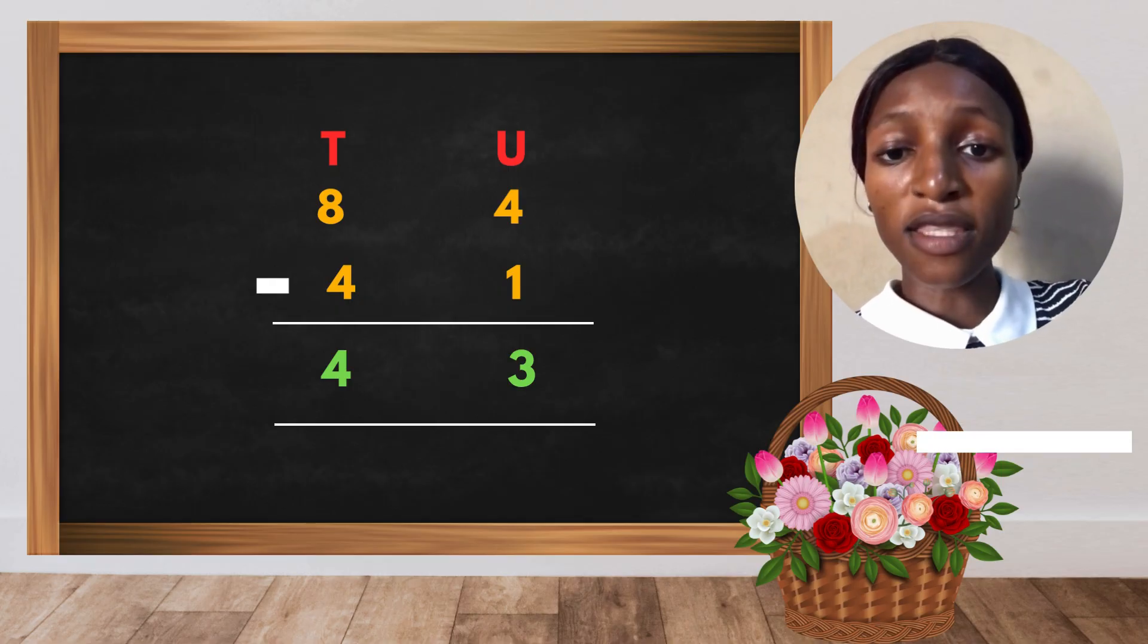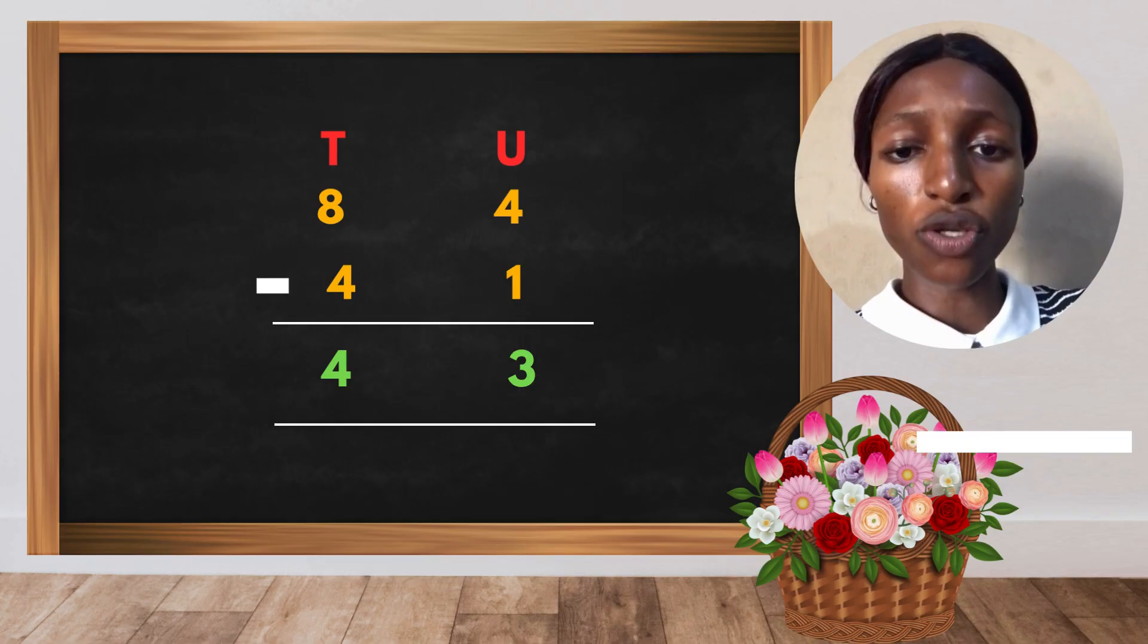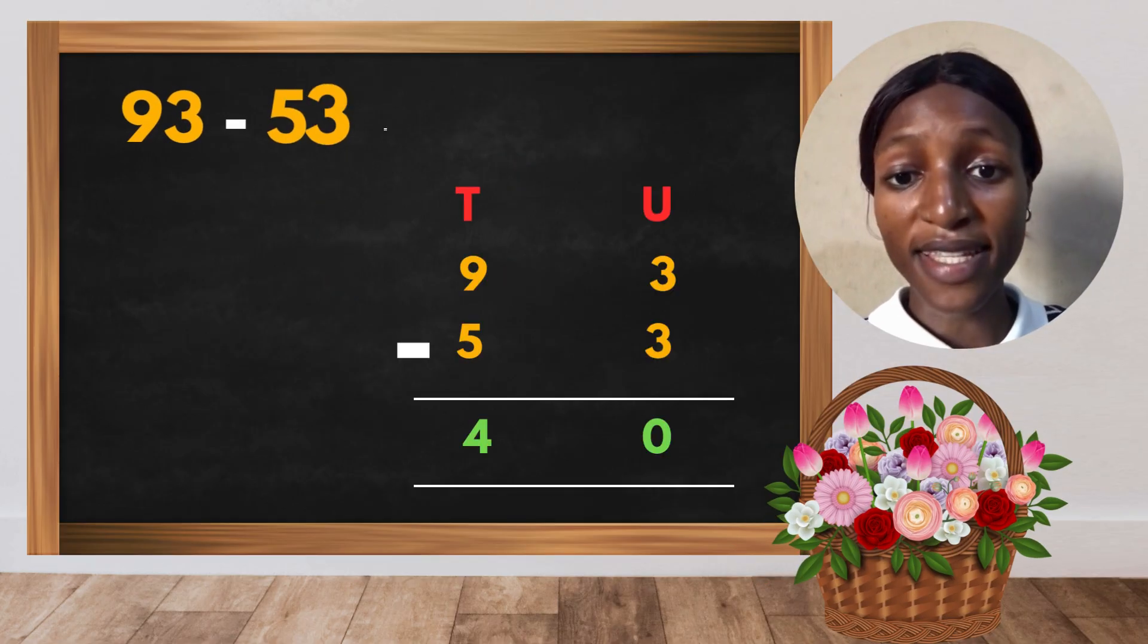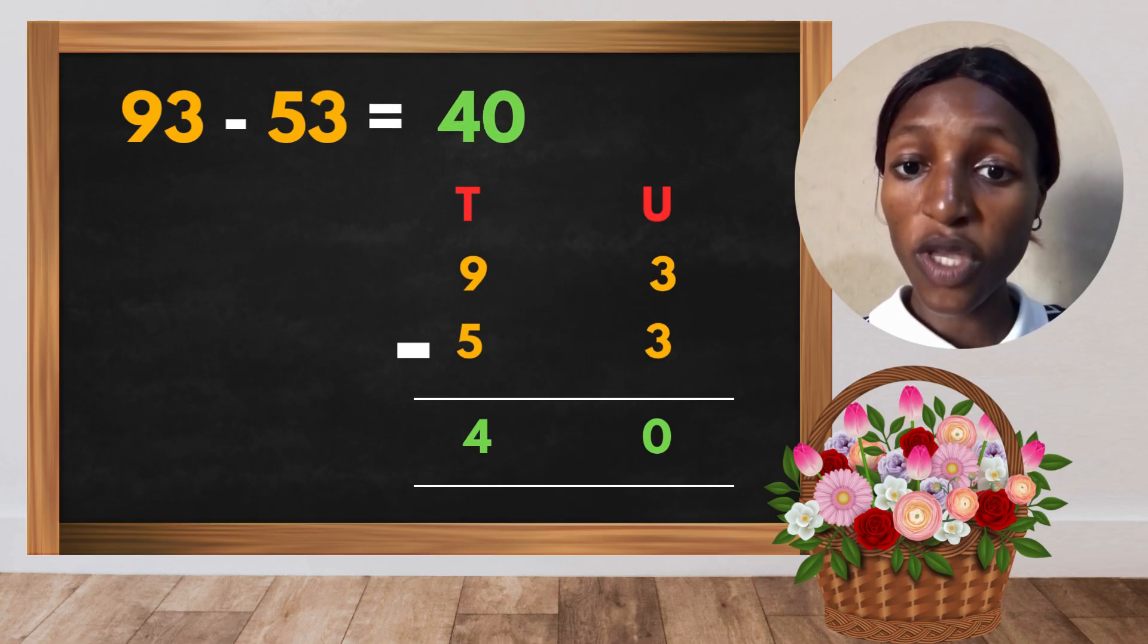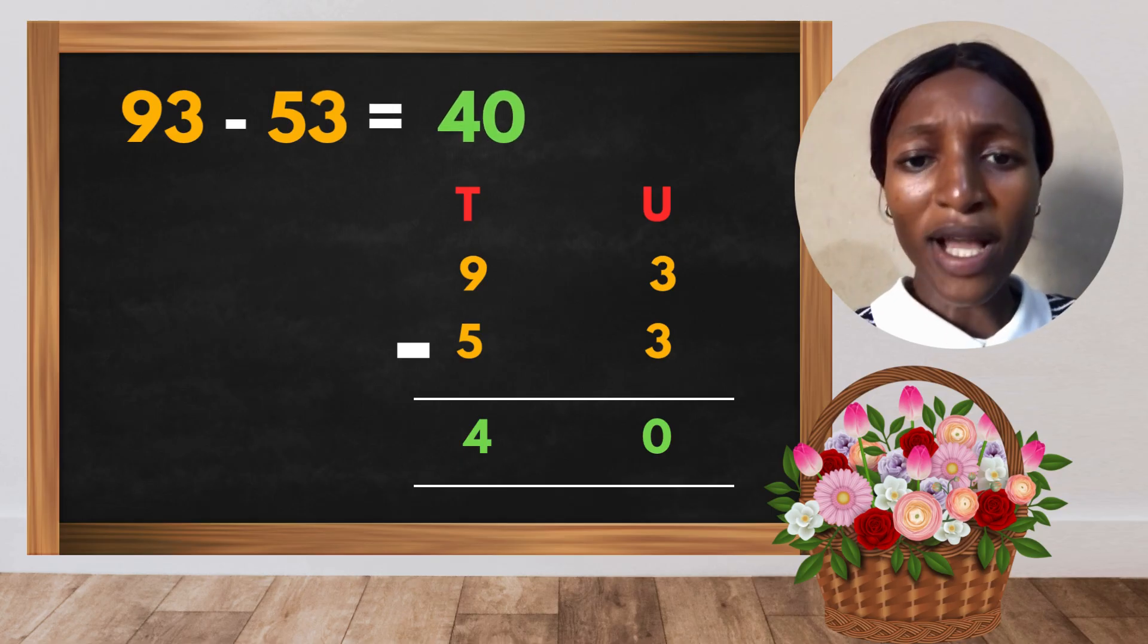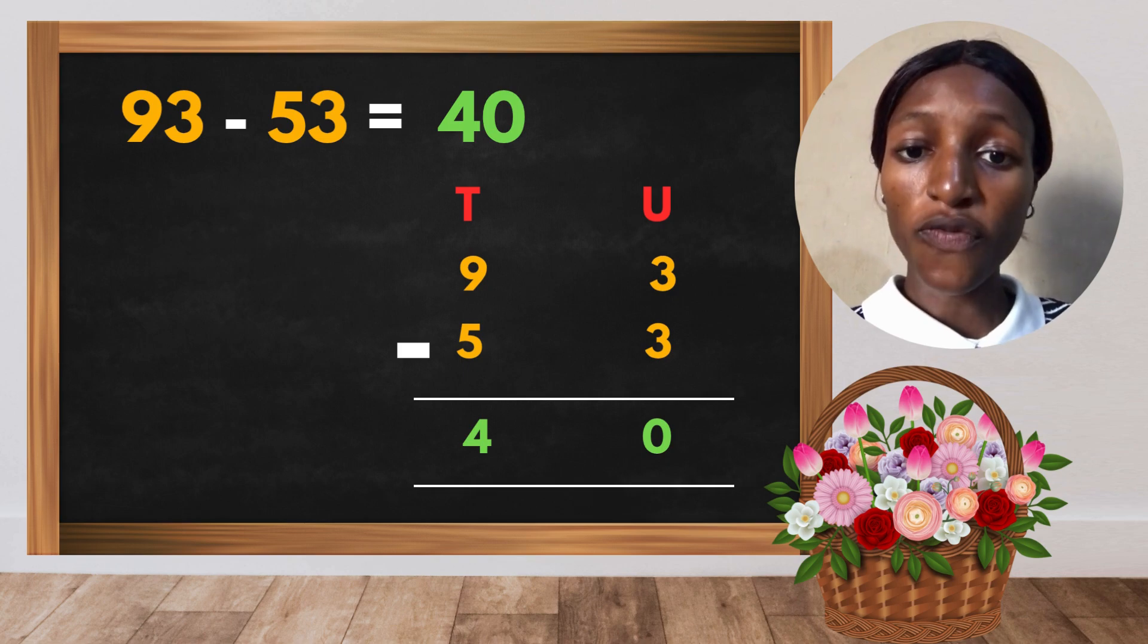So whenever you want to do your calculation, you start from the unit which is at the back. This is another example: 93 minus 53, which gives us 40. Look at the arrangement: the 93—the 9 is under tens while the 3 is under unit. And also 53: the 5 is under tens while the 3 is under unit.